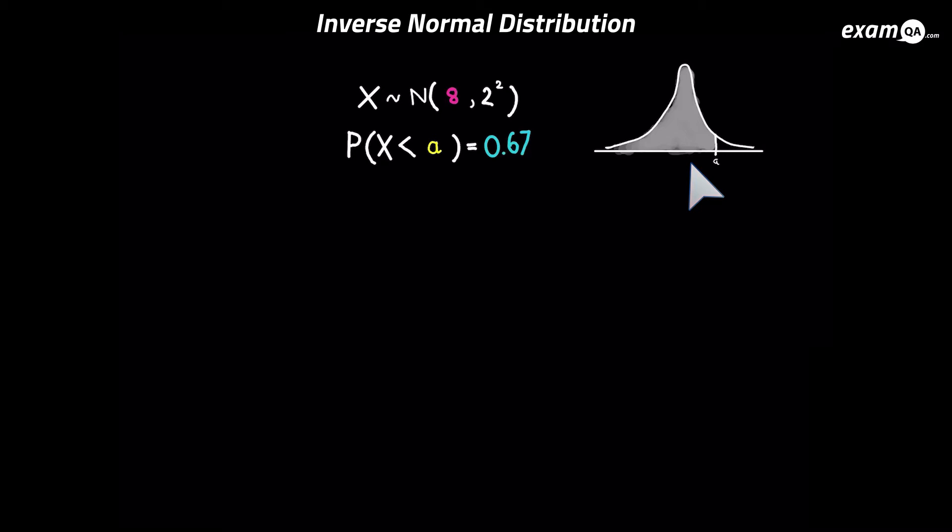And it's a perfect reverse of what we've been doing. So let's just use the inverse norm function on your calculator, put the right values in, and we should be able to work out what a is. And it's that simple. We get a as 0.88798.